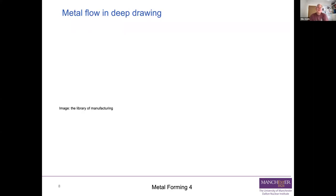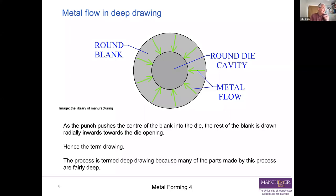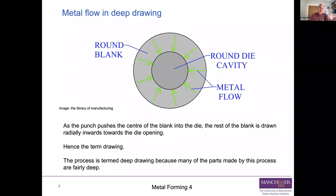Let's think about how the metal flows, because that will help us think about what might go wrong. You start off with a round blank and a round die cavity. The green arrows show how the material of the blank flows inwards and then down into the die cavity - radial flow inwards and down. As the punch pushes the centre of the blank into the die, everything is drawn radially inwards, which is why we call it drawing. And we call it deep drawing because we're making quite deep components.